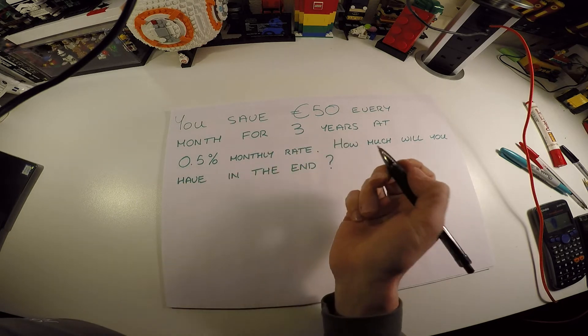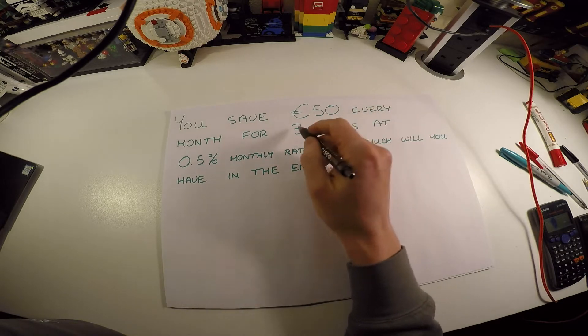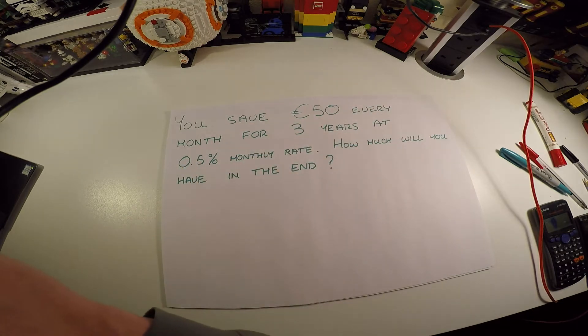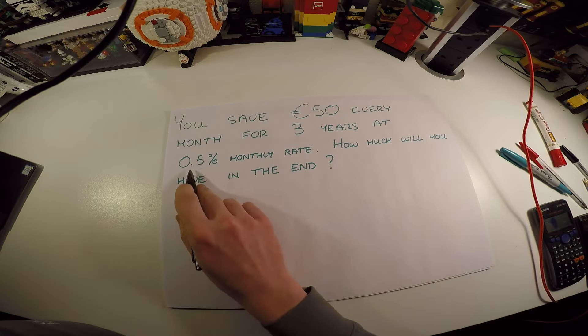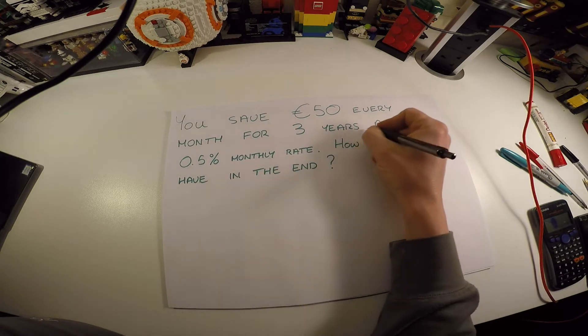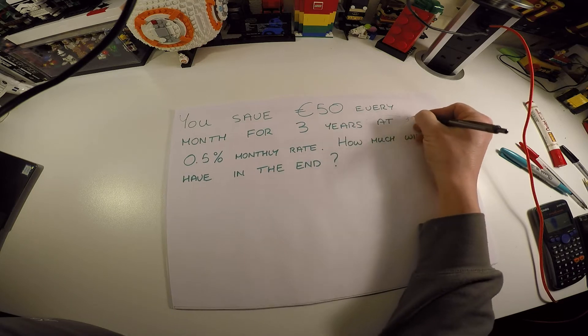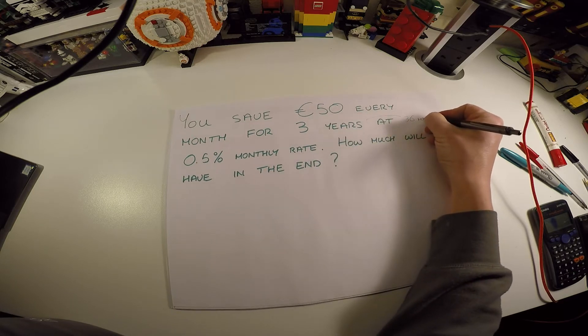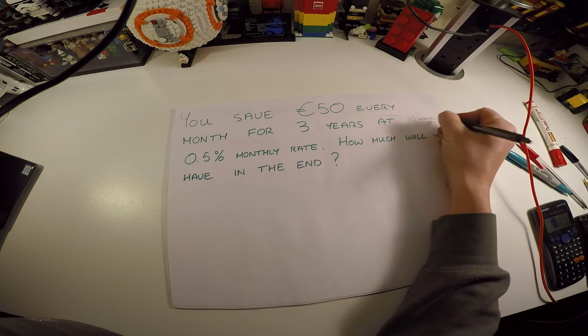In financial maths we also make sure our time frame matches our interest rate time frame. Here it doesn't, so we have a monthly interest rate, therefore we need to do time in months. We need to change this to 36 months.